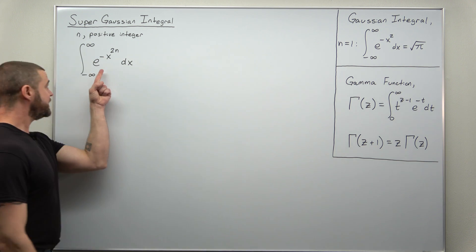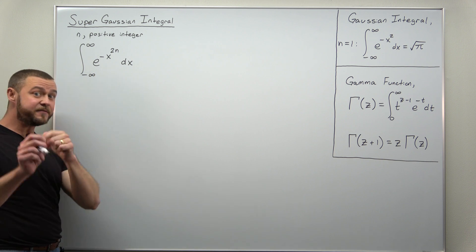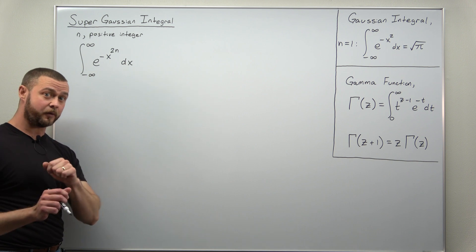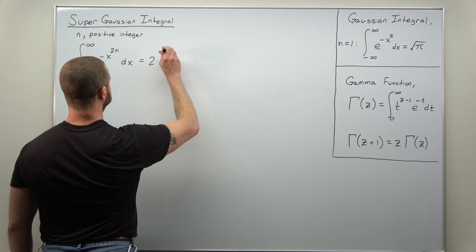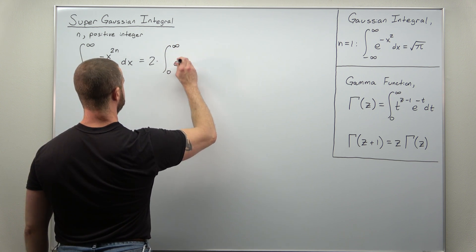First thing we're going to notice is since n is a positive integer, this is an even function and we're integrating it over a symmetric interval. So we can rewrite this as twice the integral from zero to infinity.